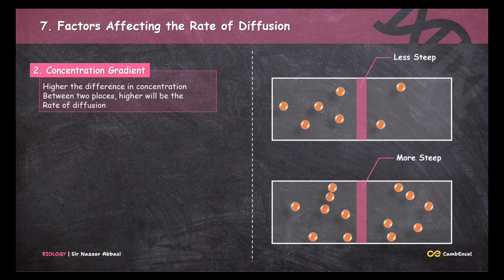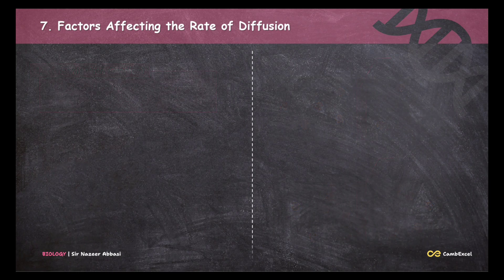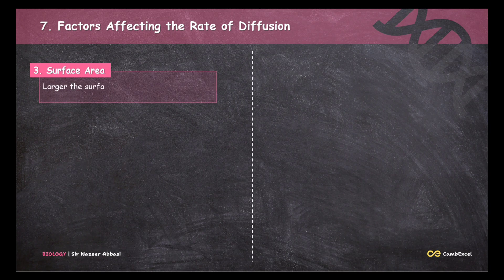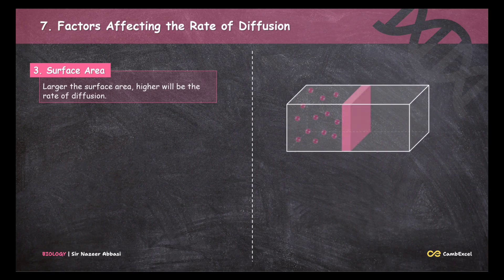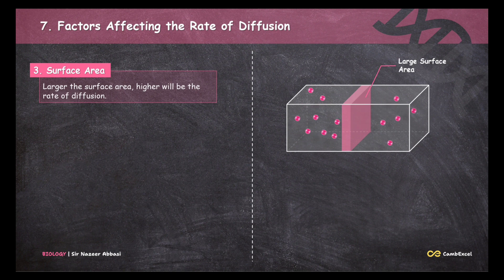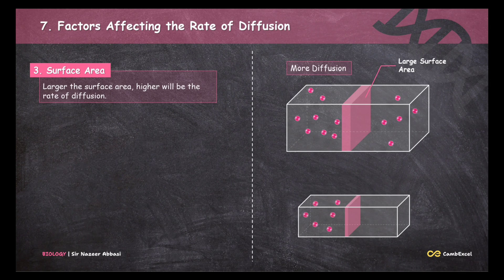The next factor affecting the rate of diffusion is surface area. The larger the surface area, the higher the rate of diffusion. For example, when particles are separated by a large surface area, more molecules diffuse from one side to the other. But when particles are separated by a small surface area, fewer molecules diffuse. This is how surface area plays a very important role in determining the rate of diffusion.